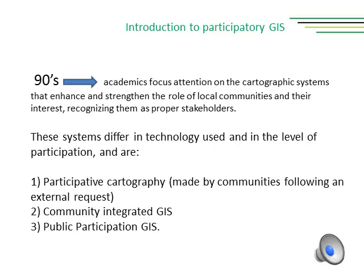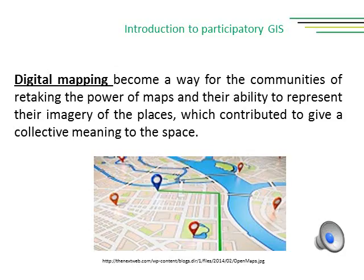During the 1990s, academics started to focus attention on cartographic systems that enhance and strengthen the role of local communities and their interests, recognizing them as proper stakeholders. These systems differ in technology used and in the level of participation. They are: first, participative cartography made by communities following external requests; second, community-integrated GIS; and third, public participation GIS. These changes affected both the institutional and the political way of describing and building the territory.